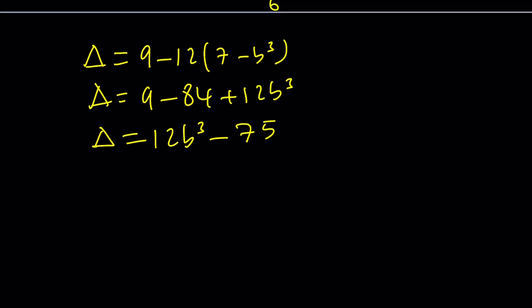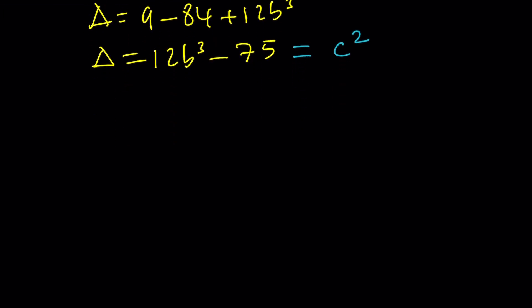So we need to explore if this can be made a perfect square. Obviously I can't set it equal to a², but maybe how about c²? This gives us a very interesting equation, which is 12b³ - c² = 75. It's kind of like a mixture of a cubic and a quadratic, which is what we had at the beginning, but obviously this equation is simpler, right? Don't you think?